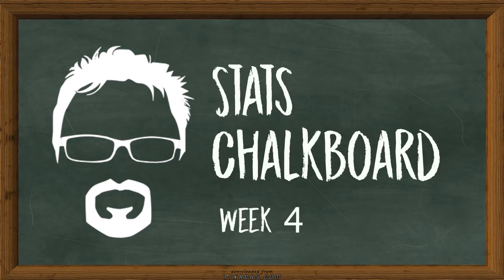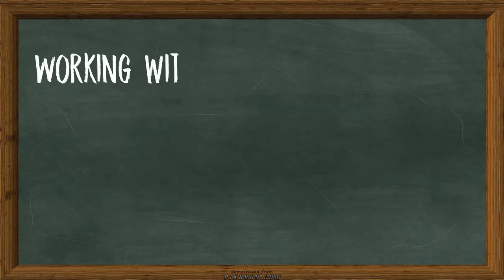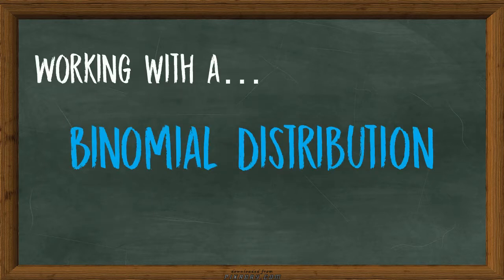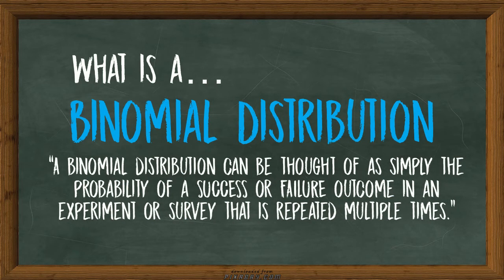Hello and welcome to Stats Chalkboard, Week 4 Edition. This week we take a look at working with a binomial distribution. What is a binomial distribution? It can be thought of as simply the probability of a success or failure outcome in an experiment or survey that is repeated multiple times.